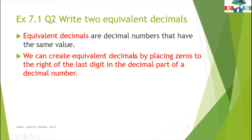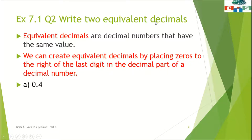Decimal part means the fractional part of a given decimal number. Now we will see question number 2. The first sum is 0.4. We have to write two equivalent decimals for 0.4. We have to just put zeros to the right of the last digit of the fractional part.